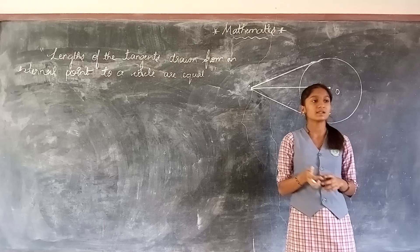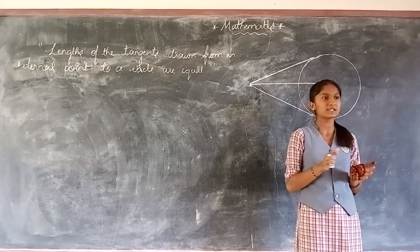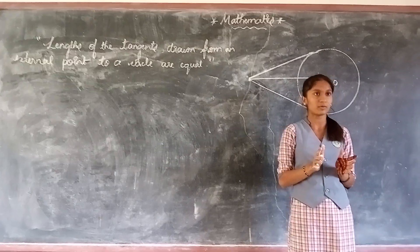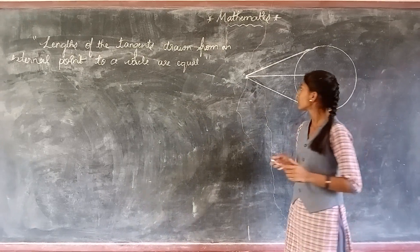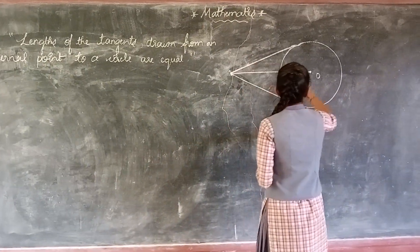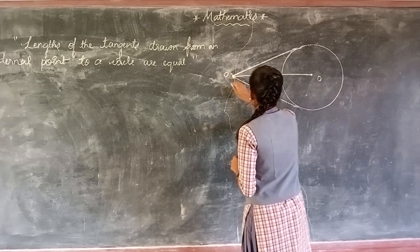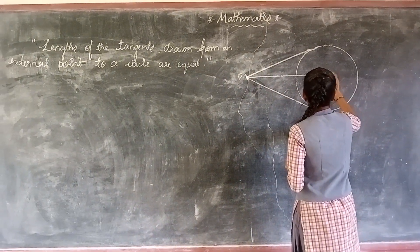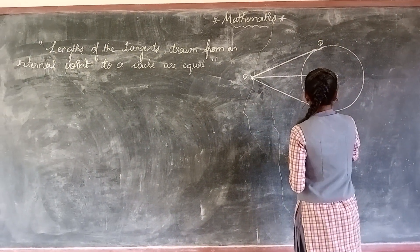A tangent is the line which touches the circle at only one point — it is called a tangent. So, this is the point P, and the points of contact are Q and R.